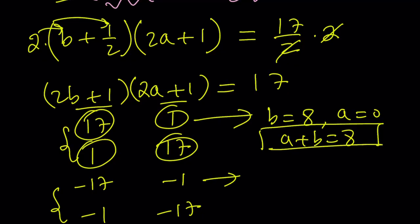And from the second one, from the negatives, I get if 2b plus 1 is equal to negative 17, that means 2b is equal to negative 18, which means b is equal to negative 9. And 2a plus 1 equals negative 1 means a is equal to negative 1. And their sum is going to be negative 10 in this case.